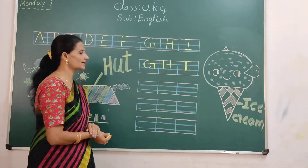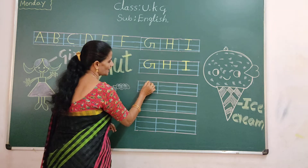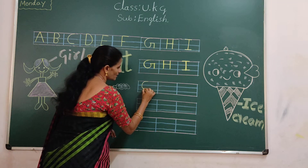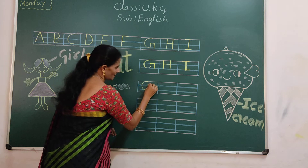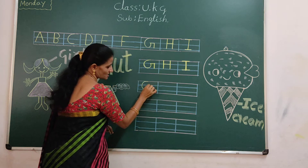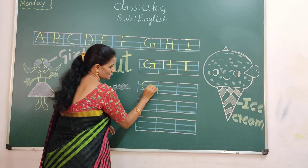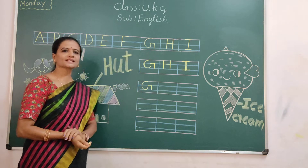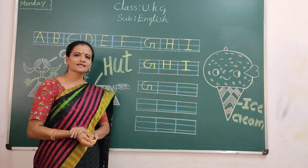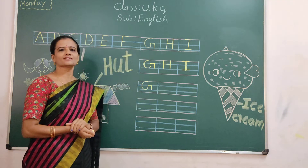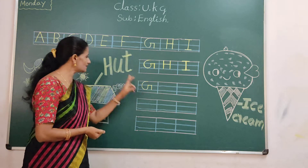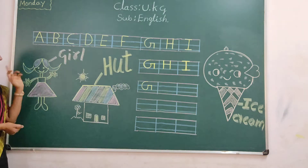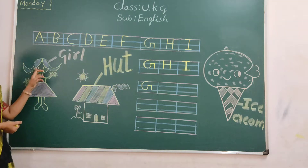So again you should write. Okay? How to write? First three lines. Curve. Again you should touch the first blue line. Sleeping. Standing. What is this letter, children? G. Say it — G. G for girl. G for girl.